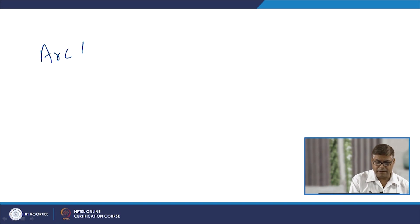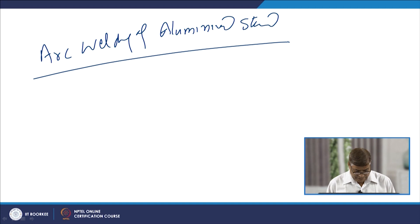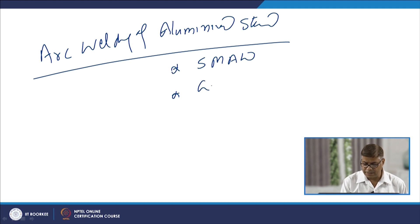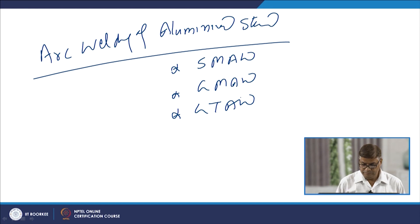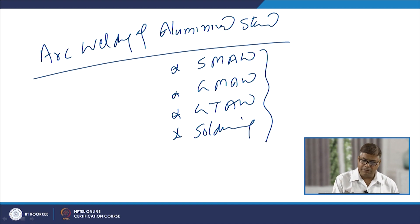Coming to arc welding of aluminized steels — arc welding may be carried out using the shielded metal arc welding (SMAW) process, the gas metal arc welding (GMAW) process, or the gas tungsten arc welding (GTAW) process. At the same time, things can also be joined using soldering processes. The kinds of issues related with these processes when aluminized steel is welded are different, so we will discuss each of these processes one by one.